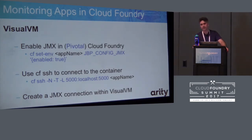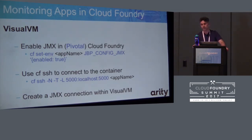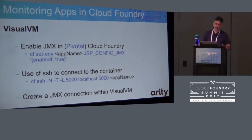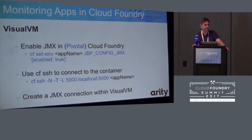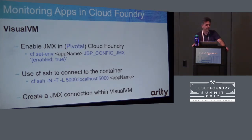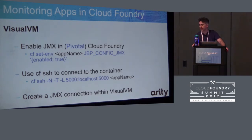Looking at the steps, the CF SSH step with the -N -T -L flags is just telling the container it doesn't need to open anything other than headless mode — no TTY presentation, just a pipe into it. The 5,000 port number is defined in the Java Build Pack, so all you're doing is linking your local port to the port in your actual container.